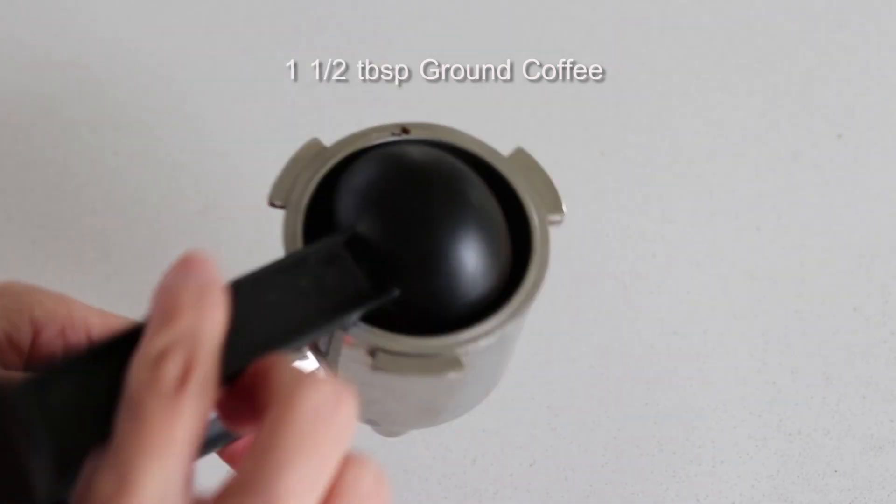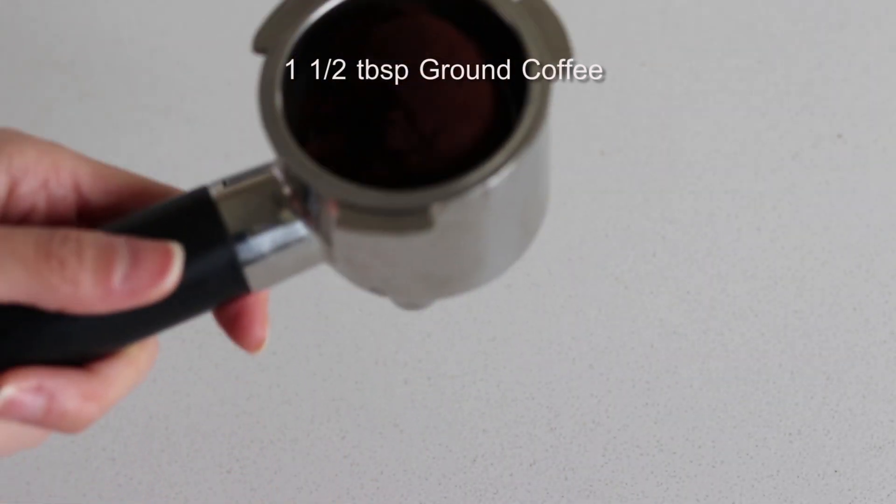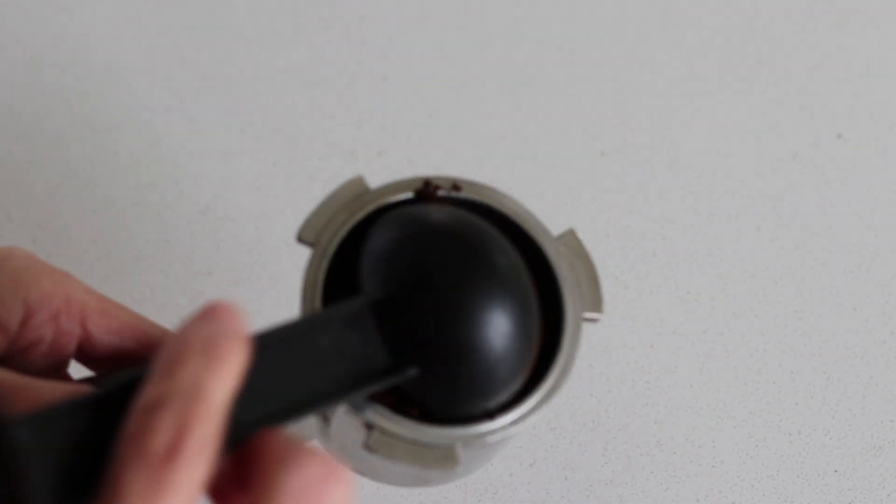I put approximately one and a half tablespoon pre-ground medium roasted espresso into a two-cup filter and press the two shots button.